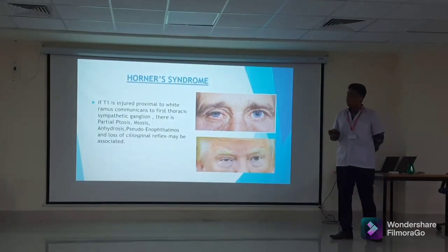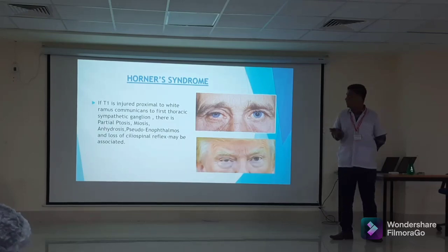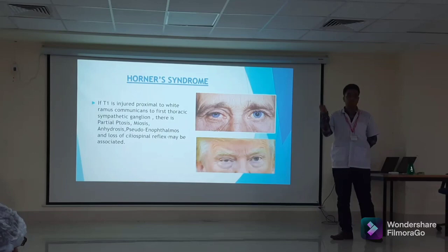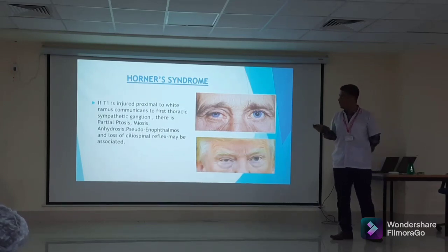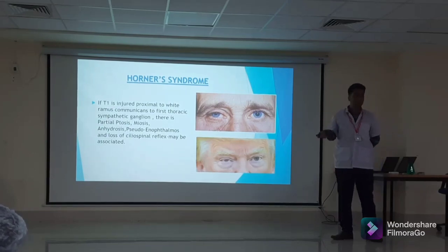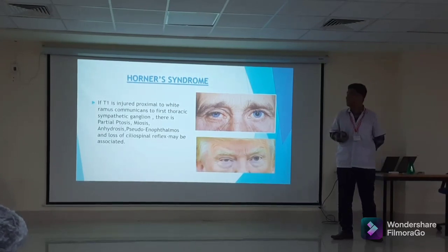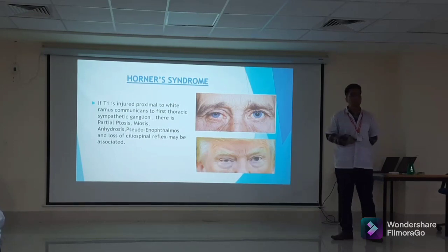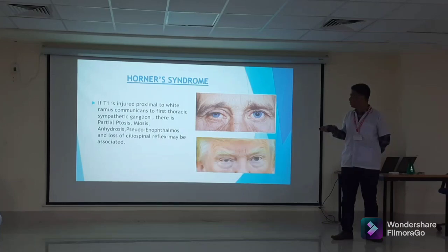A very important clinical syndrome related to Klumpke's paralysis is Horner's syndrome. If T1 is injured proximal to the white ramus communicans to the first thoracic sympathetic ganglion, there may be partial ptosis, miosis, and anhidrosis due to enophthalmos, and loss of the cilio-spinal reflex. Ptosis means drooping of the eyelid — in this case partial drooping. Miosis means constriction of the pupil. Enophthalmos means the sunken eye. In normal cases, if a painful stimulus is given to the side of the neck, the pupil gets dilated, but with loss of the cilio-spinal reflex, the pupil remains constricted.